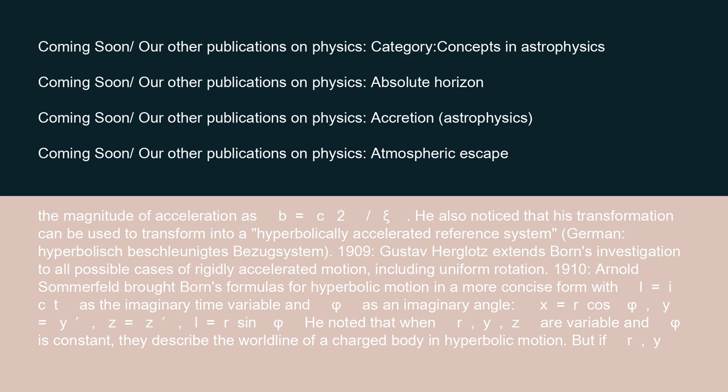1909: Gustav Herglotz extended Born's investigation to all possible cases of rigidly accelerated motion, including uniform rotation.